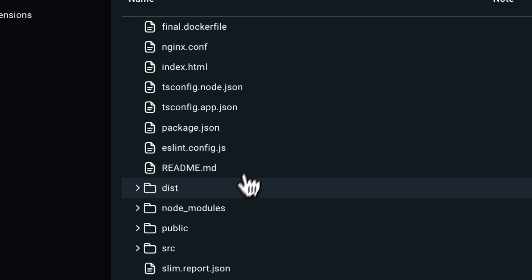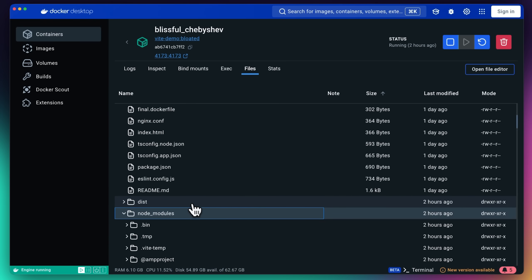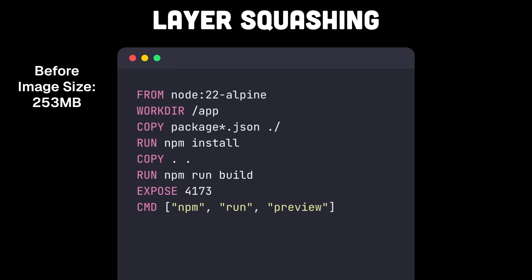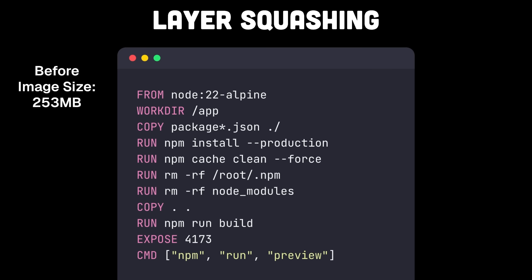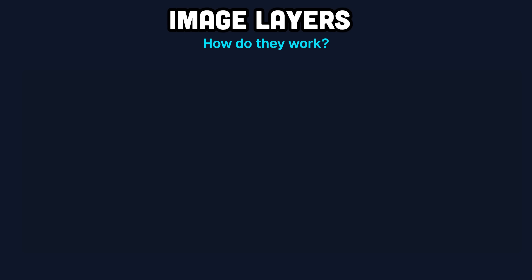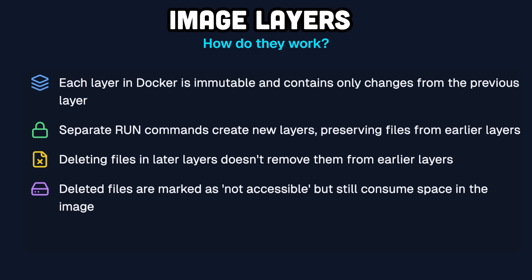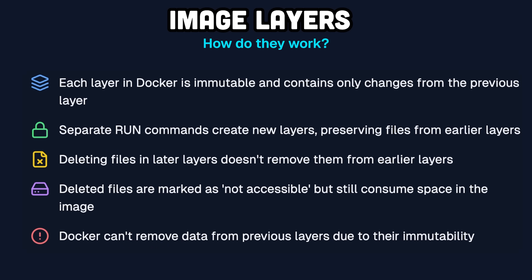Next, I want to explain a little bit about layers before we move on to multi-stage builds. Let's talk about layer squashing. If we look into our container, we can actually see a few files that we don't want in there. We can clean the cache, remove temp files, remove node_modules — so we've removed some extra folders there. But we don't actually get a smaller image. This is where we need to talk about how Docker layers actually work. The separate run commands here don't save additional space in the final image. In Docker, each layer is immutable and contains only the changes from the previous layer. When you use separate run commands, even though you're deleting files in the later layers, the files still exist in those earlier layers. Docker can't actually remove data from previous layers because they are immutable.